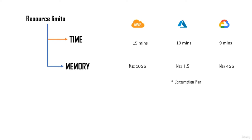Another disadvantage of using a serverless application is limited time and limited memory. You would only want to run small chunks of code for a limited period of time with limited memory. For example, an AWS Lambda function cannot run for more than 15 minutes. In Azure on the consumption plan, it's 10 minutes, and in GCP it's 9 minutes. For memory, AWS allocates a maximum of 10 GB, Azure 1.5 GB, and GCP 4 GB. These limits will keep changing over time.